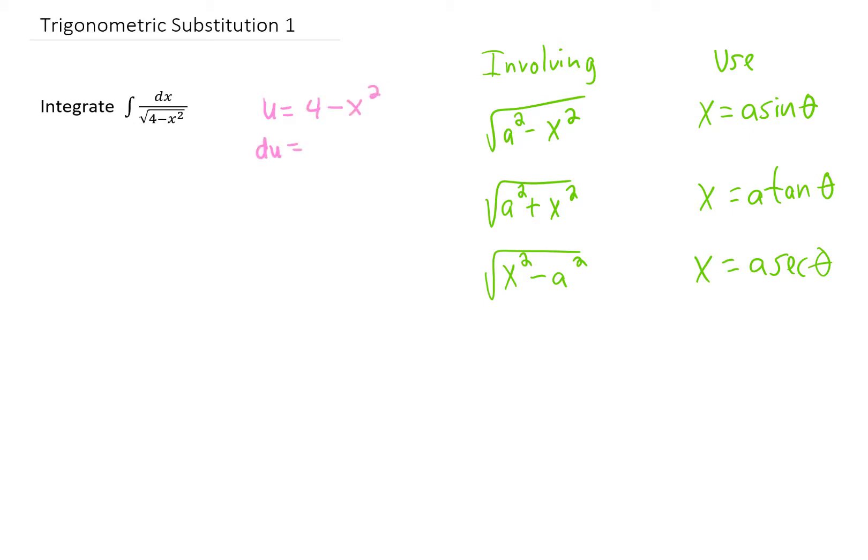The first thing you might look at is a u substitution. You'll notice that if we choose u is 4 minus x squared, our du has an x dx in it, and we don't have an x dx available in our integral. So this is not going to work out.